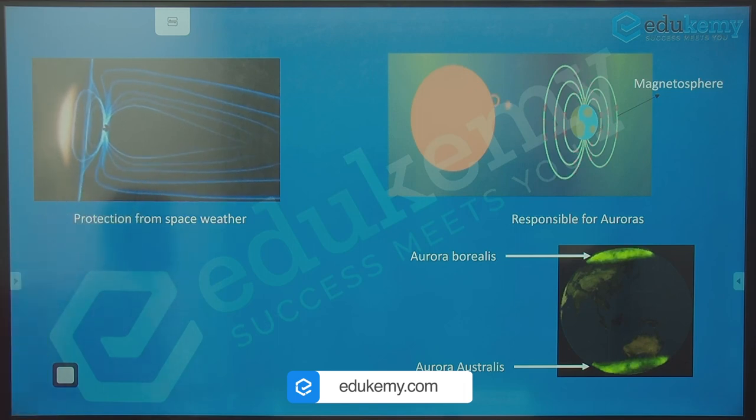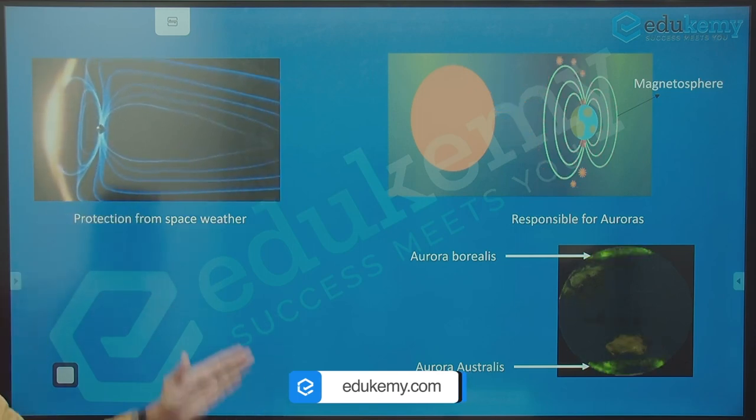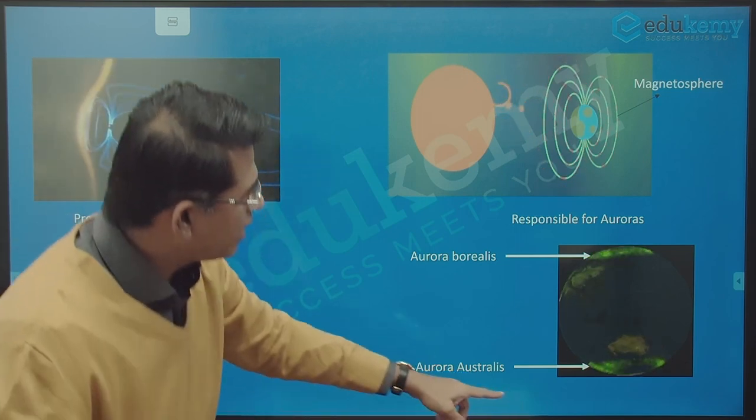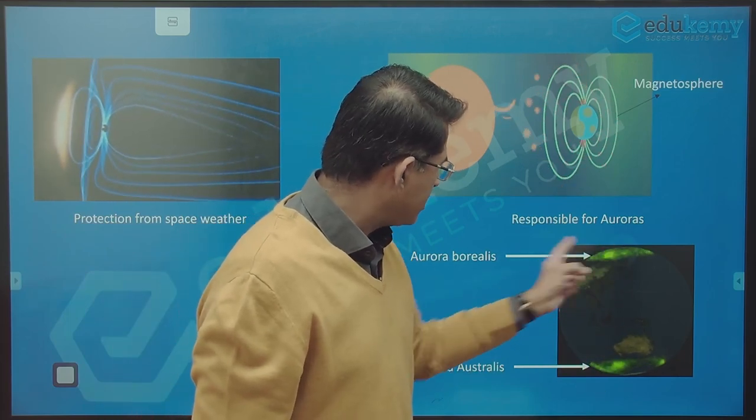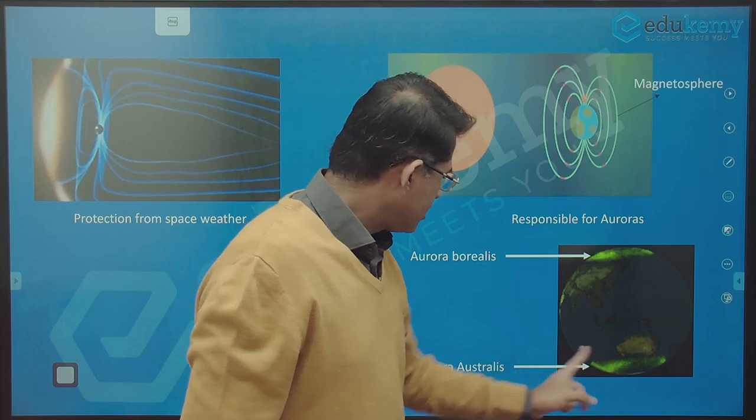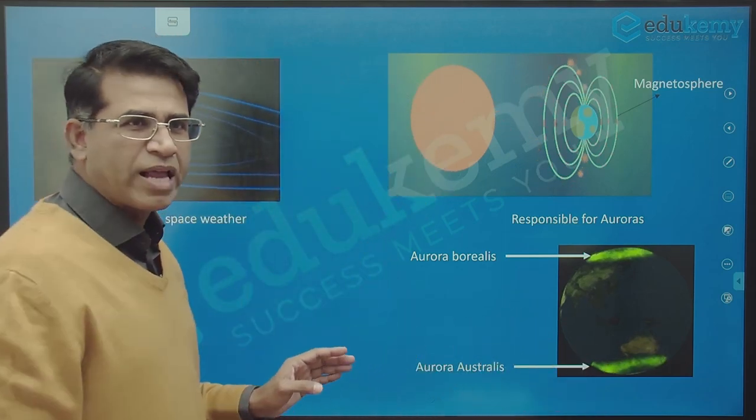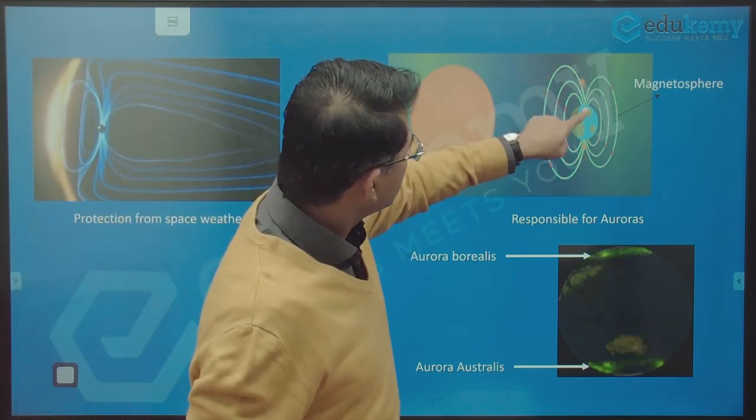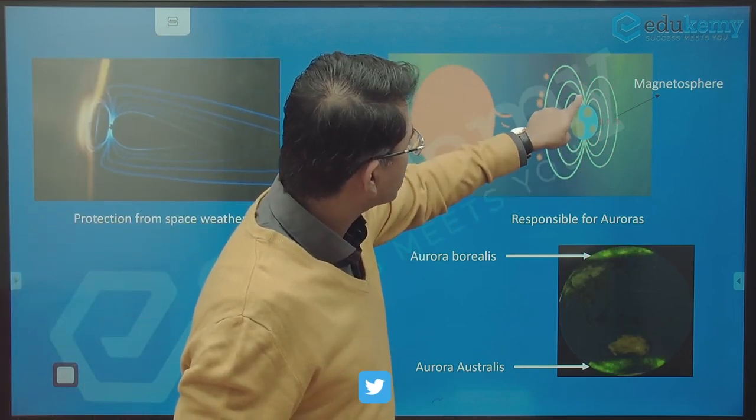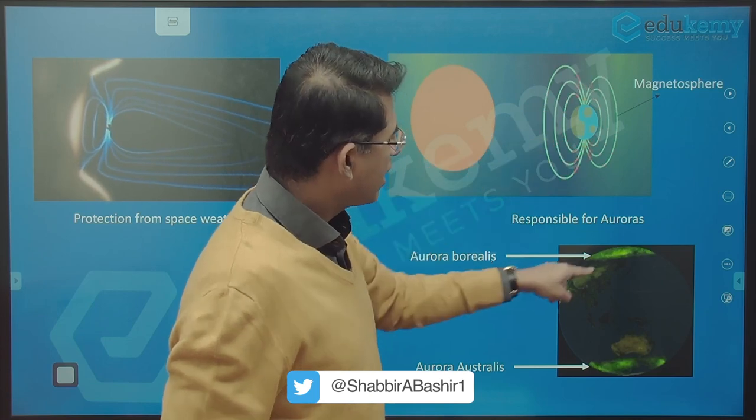Aurora borealis in the north and aurora australis in the south - there are light displays. The ions interact with the magnetic field here, and we have these lights north and south.